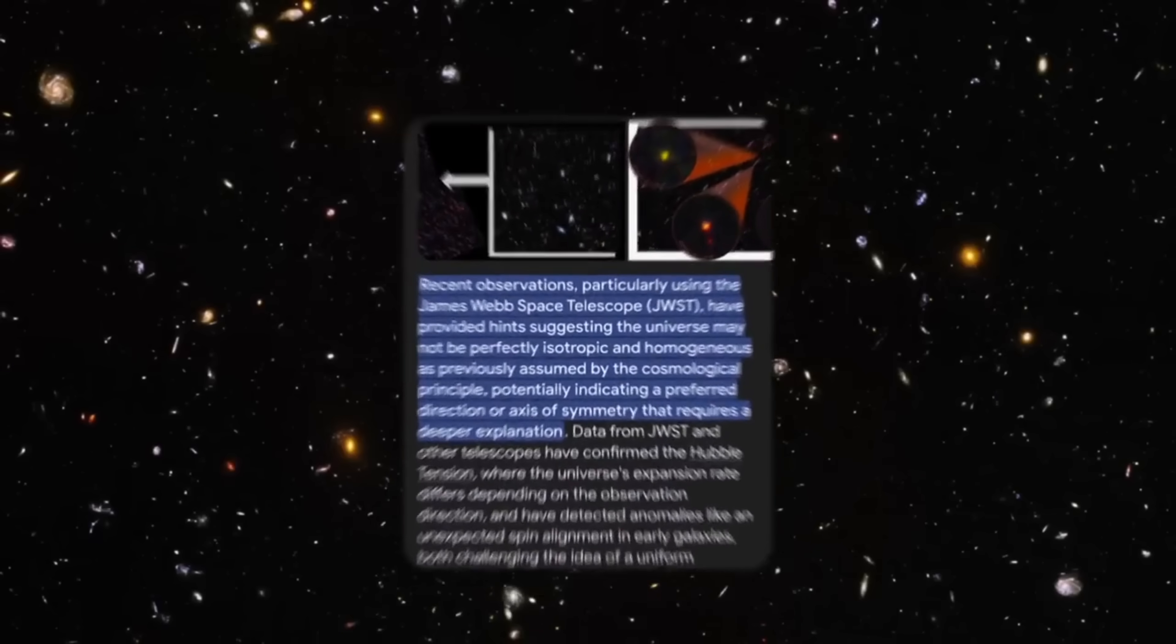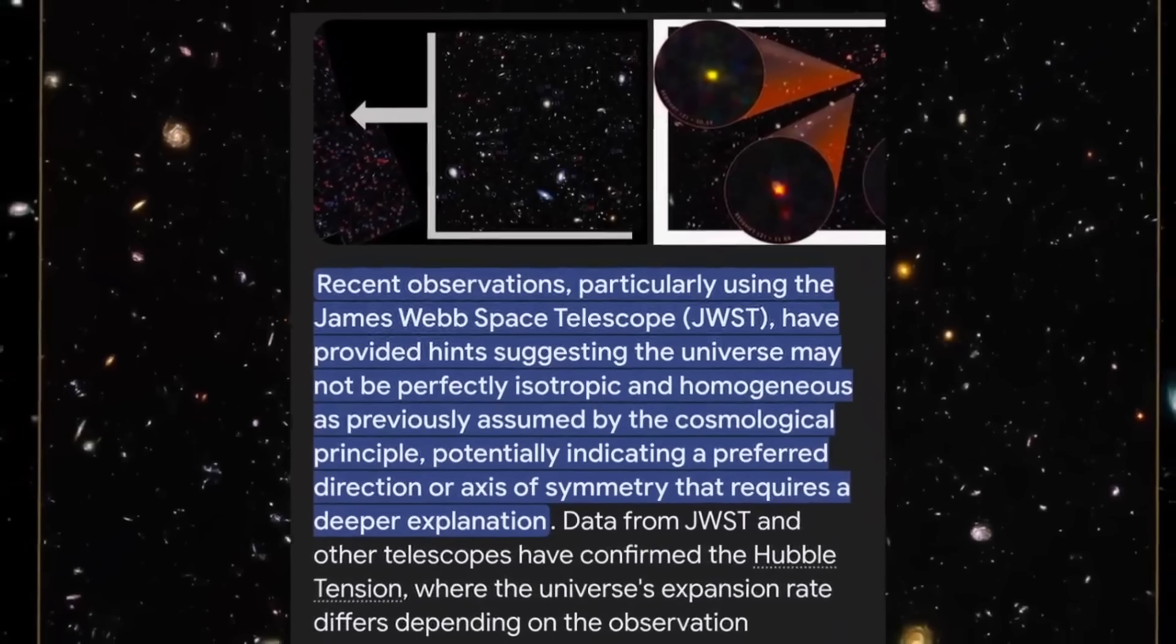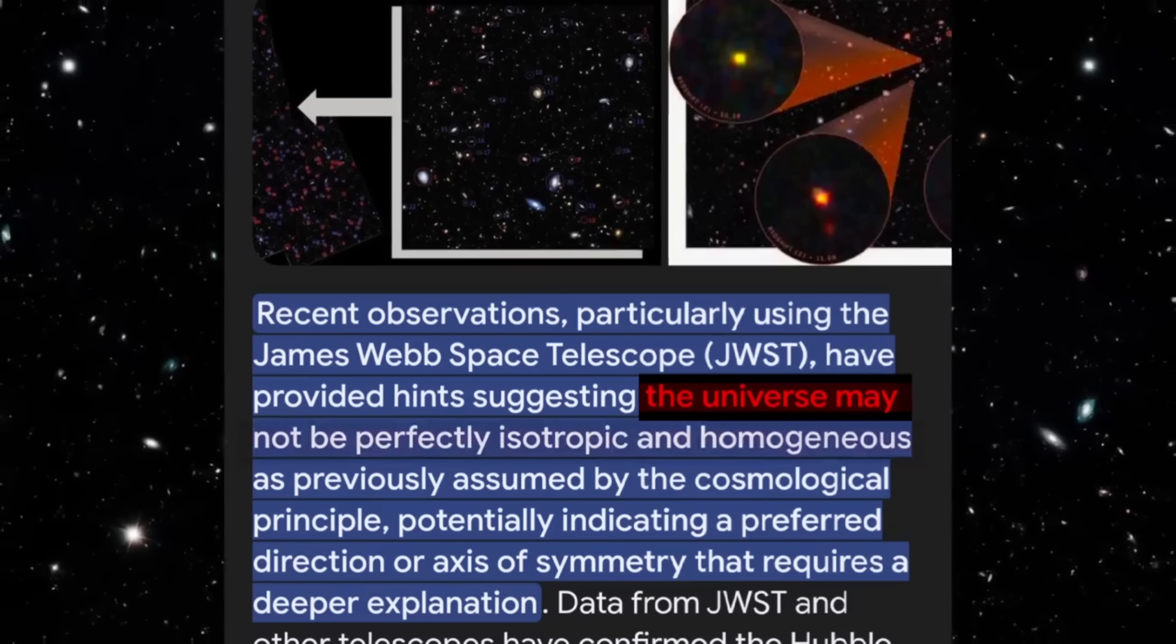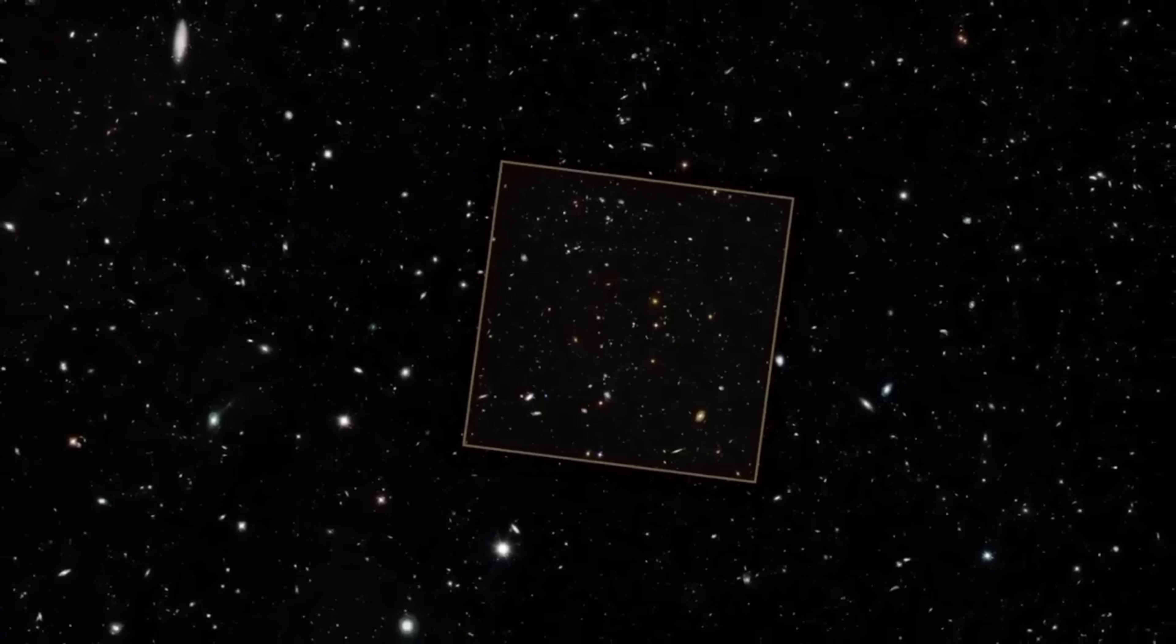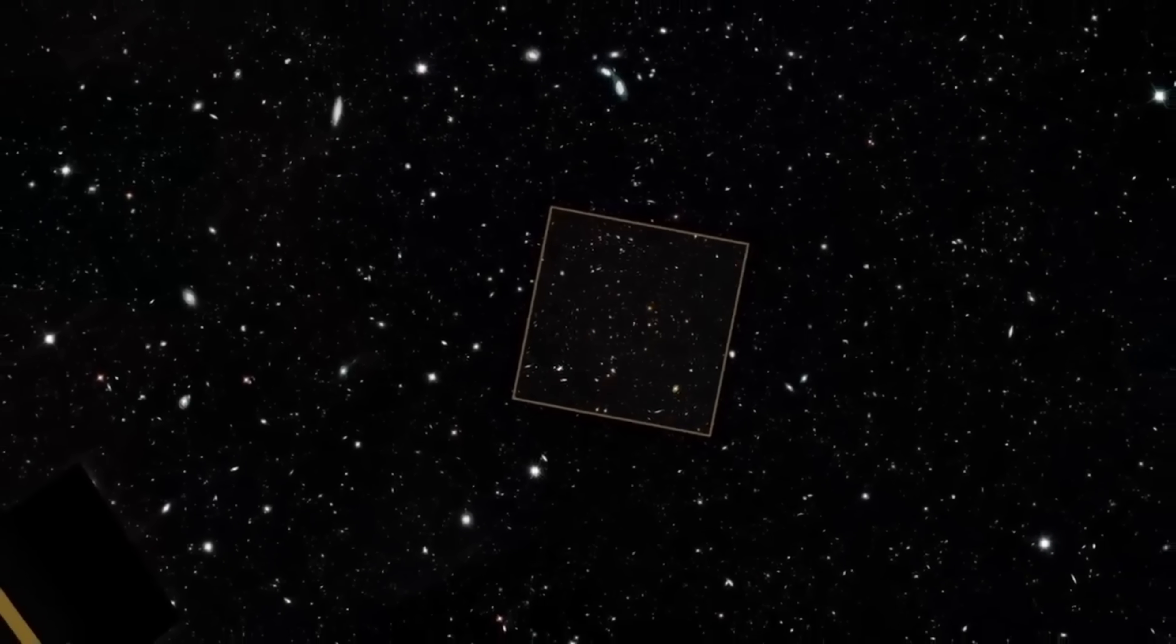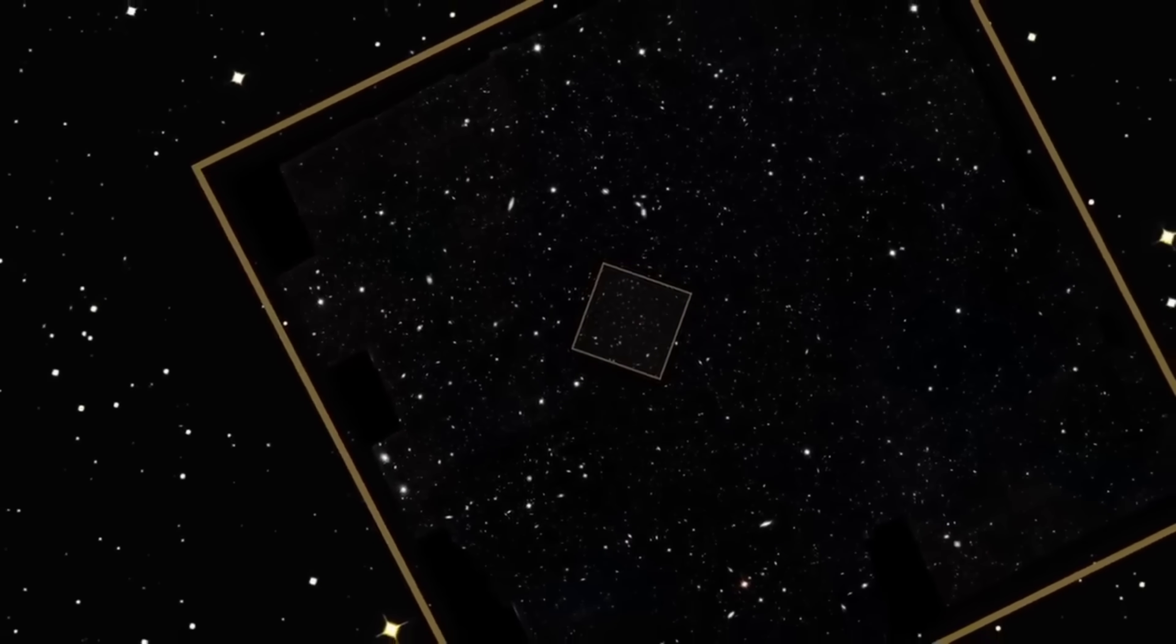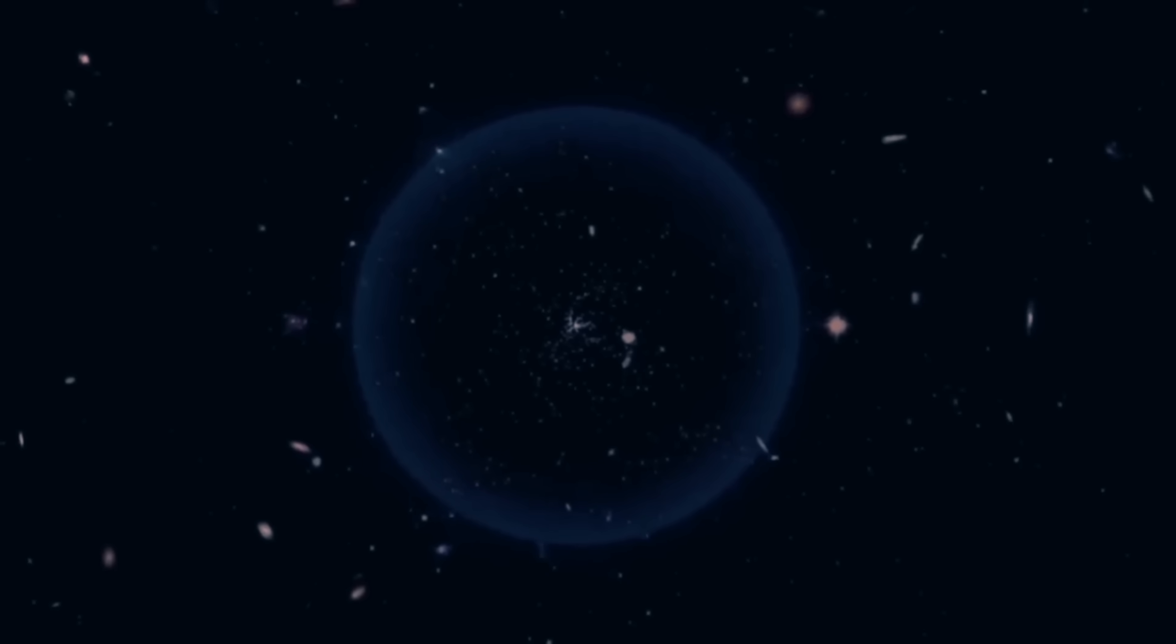But some recent hints from the James Webb Space Telescope have raised questions. The data suggests the universe might not be perfectly uniform after all. If that's true, then what exists beyond our observable universe could be very different from what we see around us.